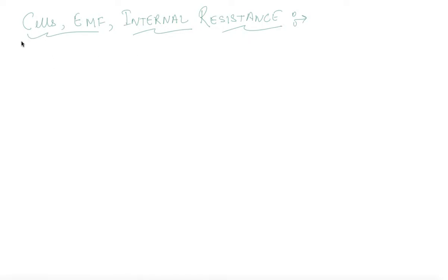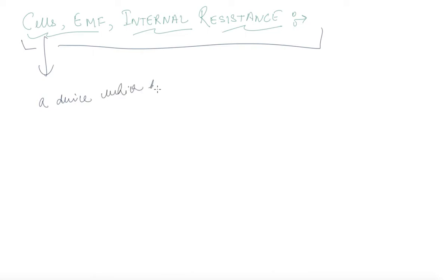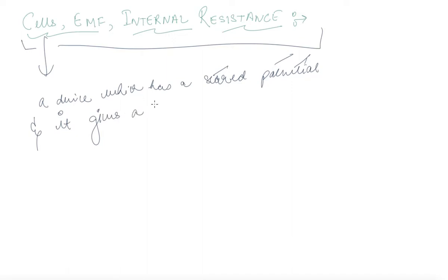Welcome to this chapter on cells, EMF, and internal resistance. If you try to understand what a cell is, you can say it is a device which has a stored potential and gives a steady current. This is what you can understand as a cell.